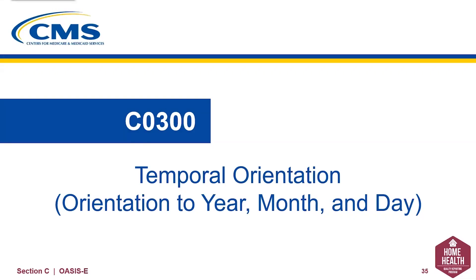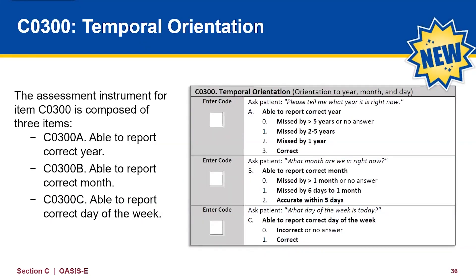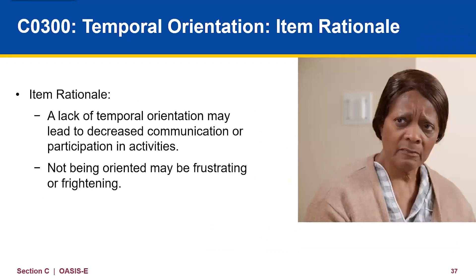Now let's look at C0300, temporal orientation, which is comprised of three sections: C0300A, able to report the correct year; C0300B, able to report the correct month; and C0300C, able to report the correct day of the week. A lack of temporal orientation may lead to decreased communication or participation in activities, and not being oriented may be frustrating or frightening. Temporal orientation is the ability to place oneself in correct time — for the BIMS, it is the ability to indicate the correct date in current surroundings.